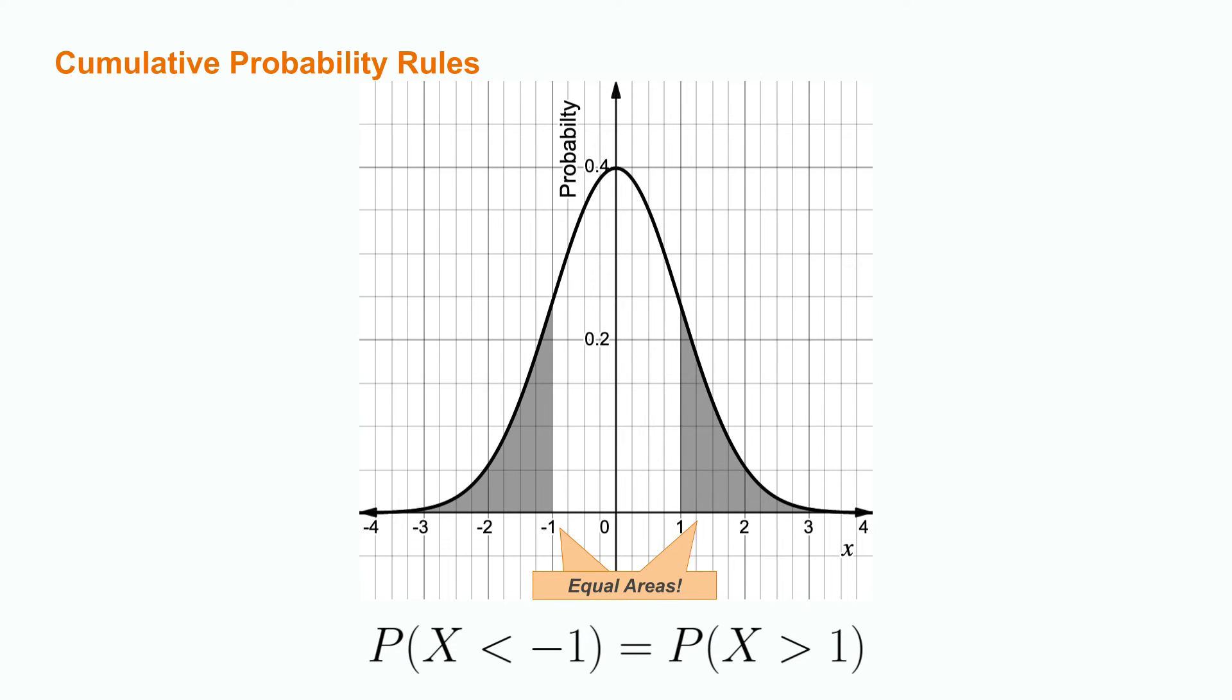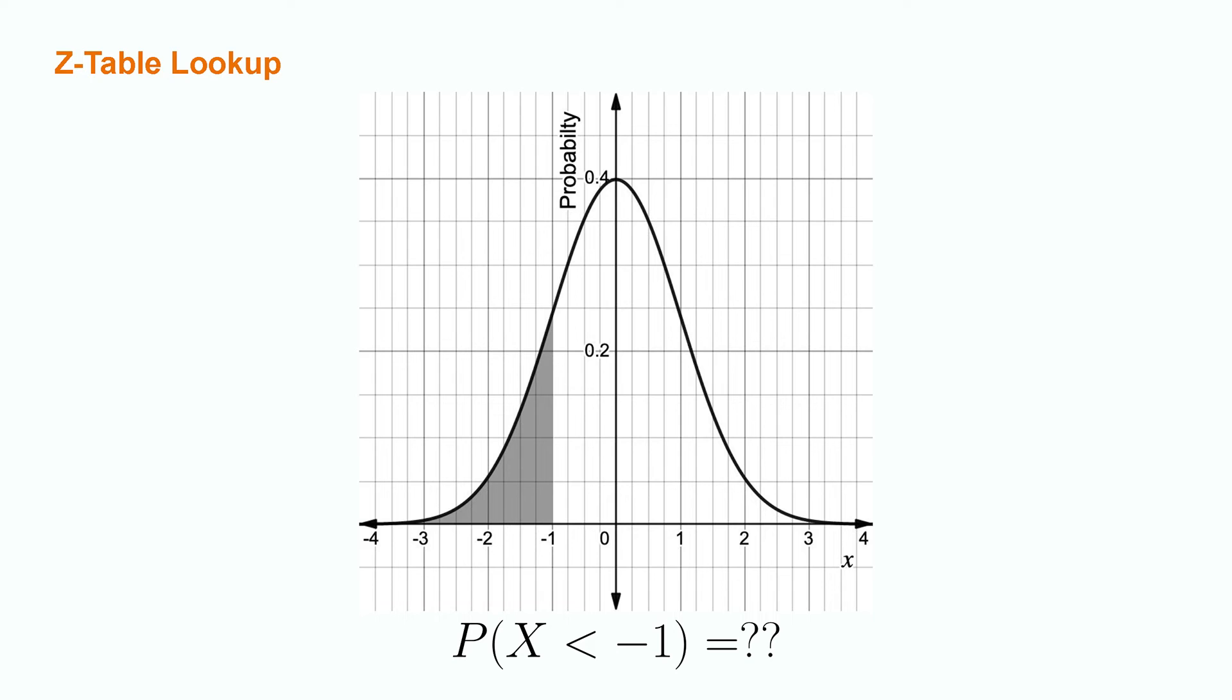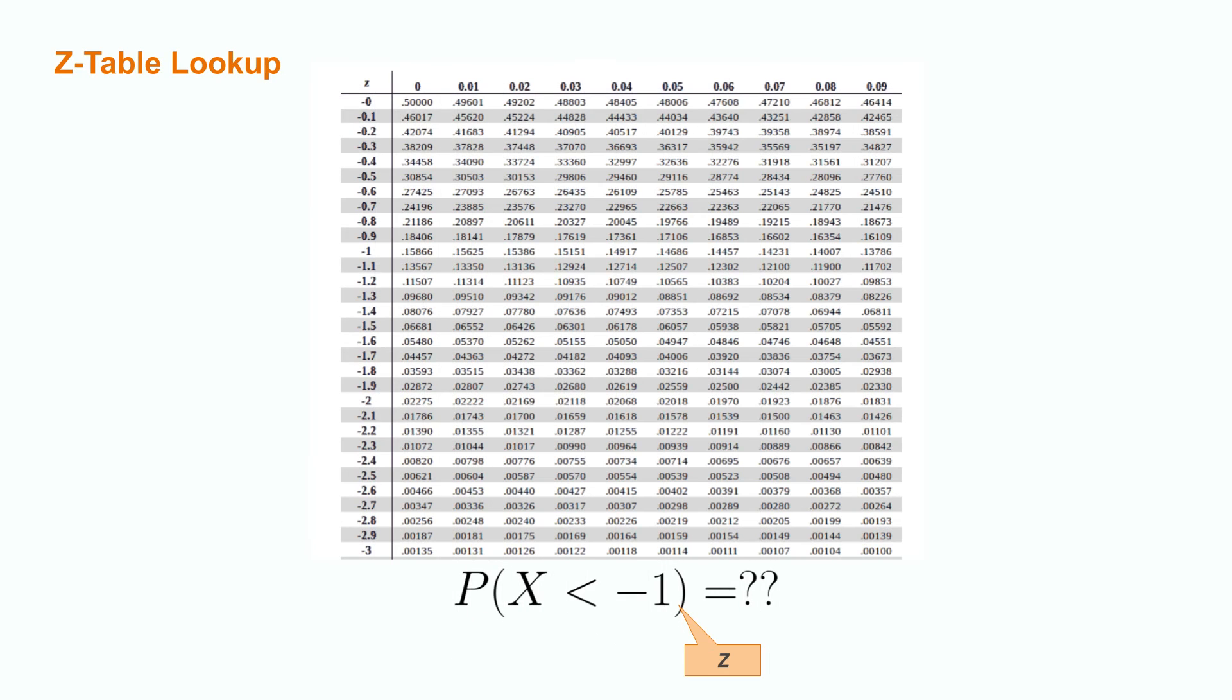If you want to look up this value exactly, we need to reference a z-table. Let's ask ourselves what the probability of seeing some value that is left of negative 1 is. To do this, we can reference a standard normal table. This is also called a z-table. Z, in this case, refers to the lookup value of negative 1.